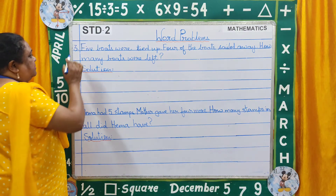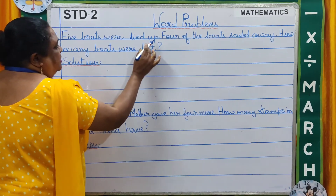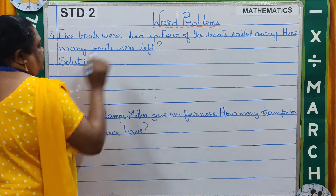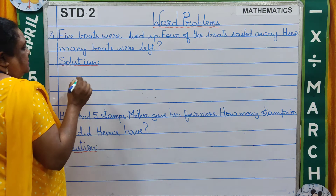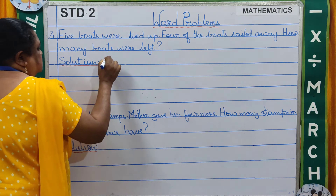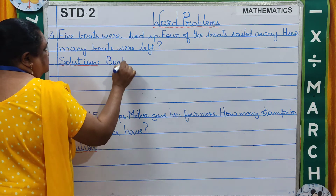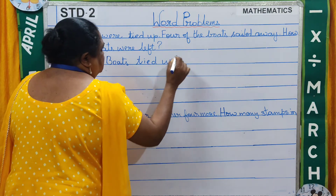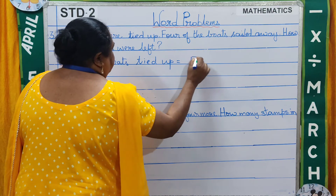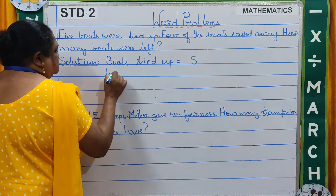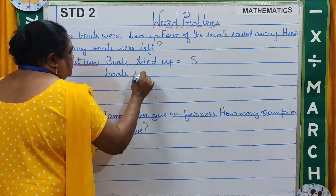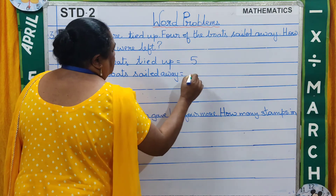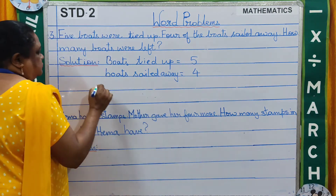Now, children, coming to the third question. 5 boats were tied up. 4 of the boats sailed away. How many boats were left? So the first statement: boats tied up is equal to 5; boats sailed away is equal to 4.